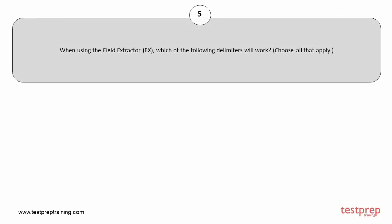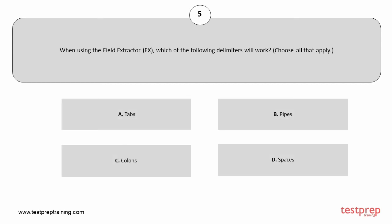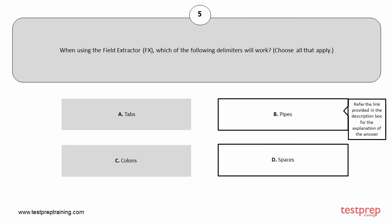Question number 5. When using the field extractor, which of the following delimiters will work? Choose all that apply. Your options are: A. Tabs. B. Pipes. C. Colons. D. Spaces. The correct answers are option B and D.